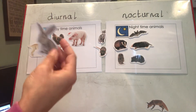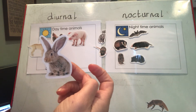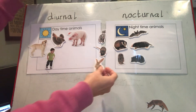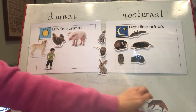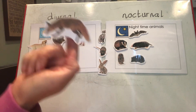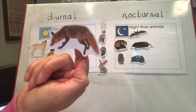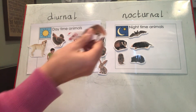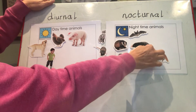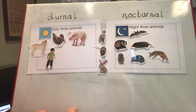Then I've got a rabbit. That's a little bit tricky too — like the cat and the rat, some rabbits are nocturnal and some are diurnal. And the last animal is a fox — tell your grown-up where this one should go. Yes, the fox is a nighttime animal — it's nocturnal.